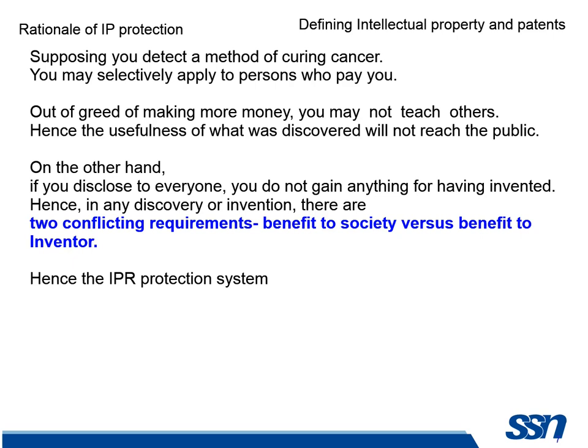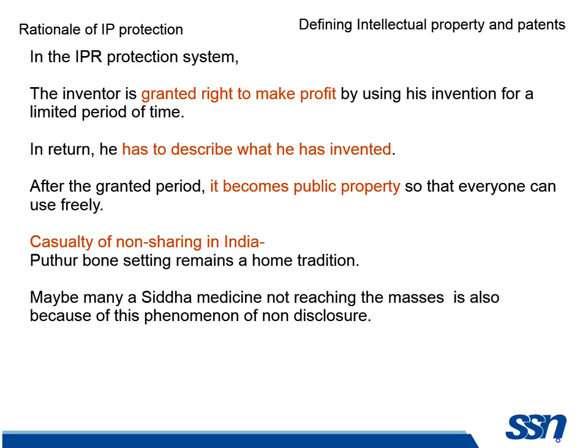Now, why should you have protection? Suppose I detect a method of curing a cancer — I may selectively apply it only on persons who give me money, and those who cannot pay will not get my benefit. Therefore, the usefulness of what was discovered will not reach the public at all. On the other hand, if I disclose this to everyone, I do not get anything for having invented it. Therefore, it's a compromise between two conflicting requirements: there should be a benefit to society because of the invention, and also a benefit to the inventor. The IPR protection system is an agreement between the government and the individual. The inventor is given a right to make profit by not allowing others to copy the idea. In return, the inventor has to explain what he has actually discovered or invented. I tell you what I have done and you prevent others from copying it for a particular period of time — that's the idea of IPR protection.